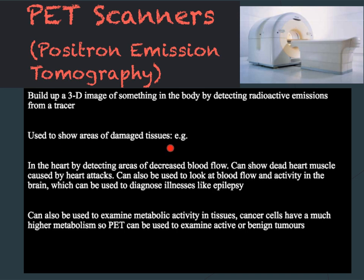PET scanners can show areas of damaged tissue, for example in the heart to look at blood flow, or in the brain to look at epilepsy. You can also use them to look at the metabolic activity in tissues, as cancer cells have a much higher metabolism, so PET can be used to examine active or benign tumours. Benign tumours will have much lower metabolic activity.